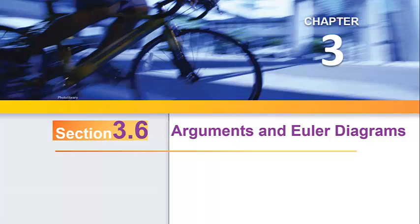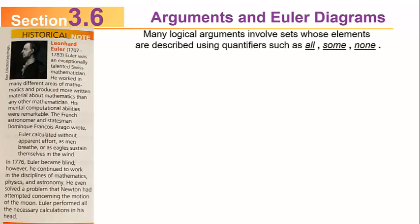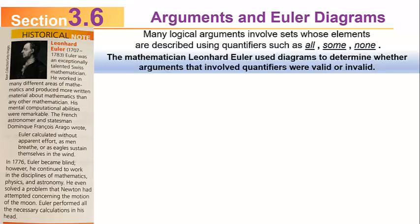Section 3.6 is called Arguments and Euler Diagrams. Many logical arguments involve sets whose elements are described using quantifiers such as all, some, and none. The mathematician Leonard Euler used diagrams to determine whether arguments that involve quantifiers were valid or invalid.